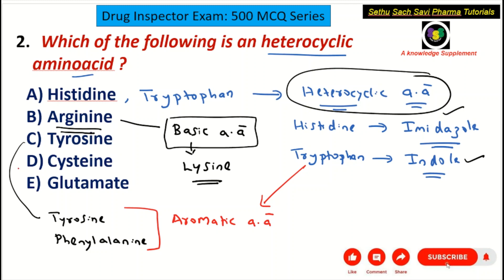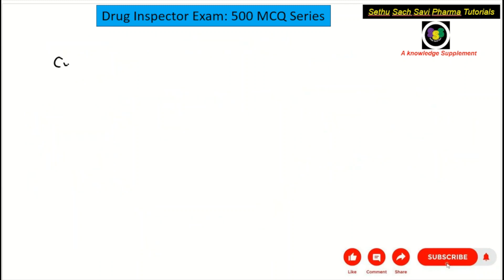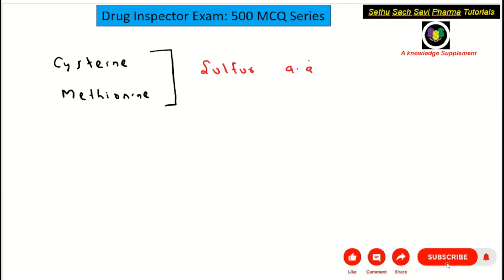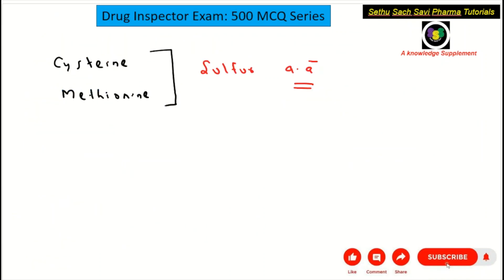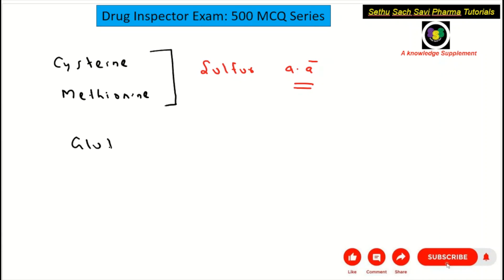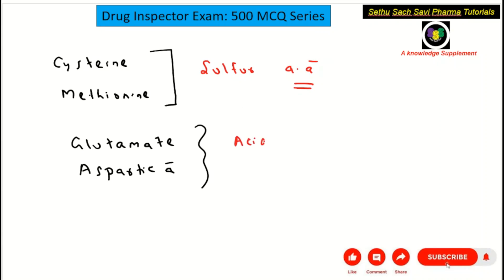Coming to D choice, cysteine — cysteine and methionine are sulfur-containing amino acids. Coming to E choice, glutamate: the ionic form of glutamic acid, as well as aspartic acid, belong to the category of acidic amino acids. So glutamic acid or glutamate as well as aspartic acid are acidic amino acids, cysteine and methionine are sulfur-containing, and tyrosine, phenylalanine, and tryptophan are aromatic amino acids.